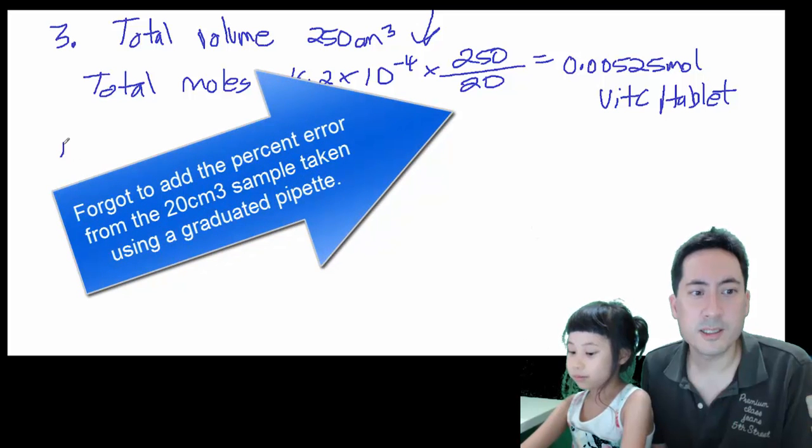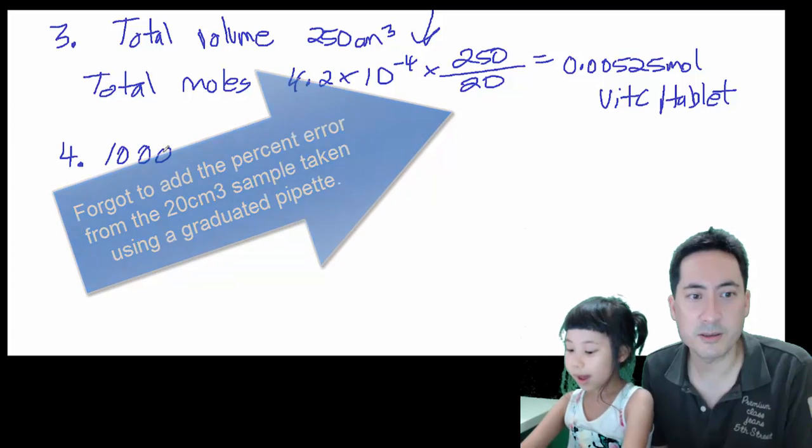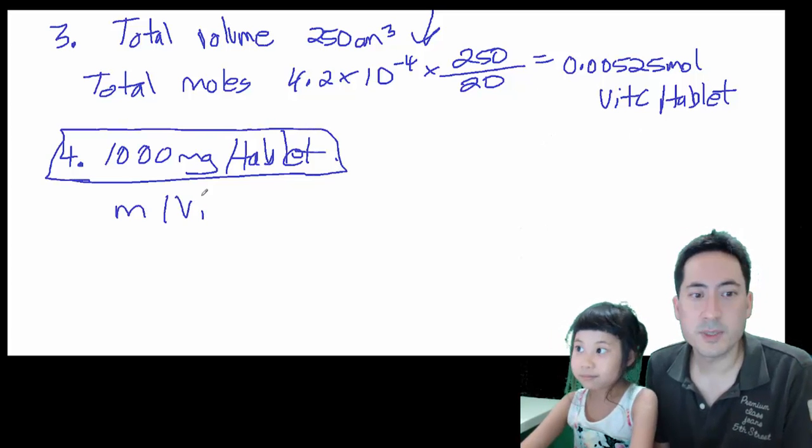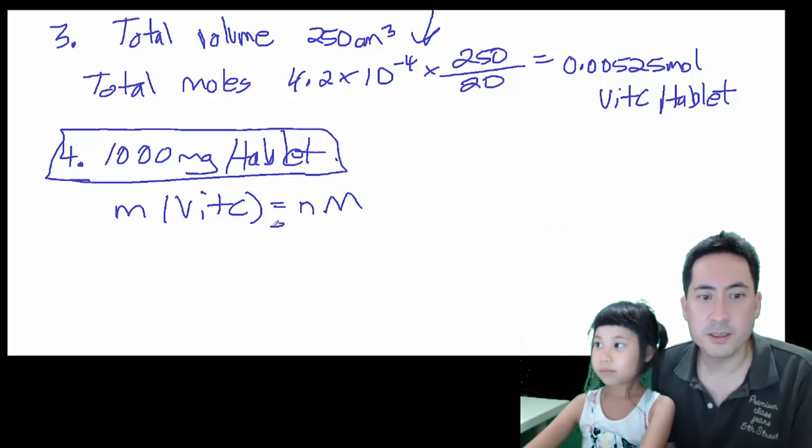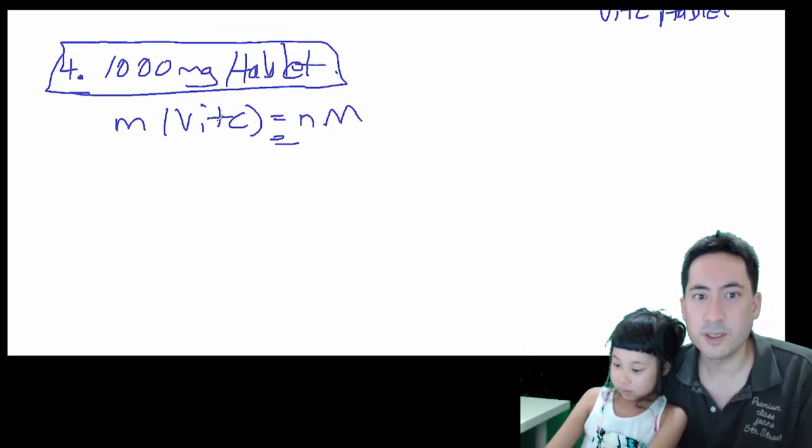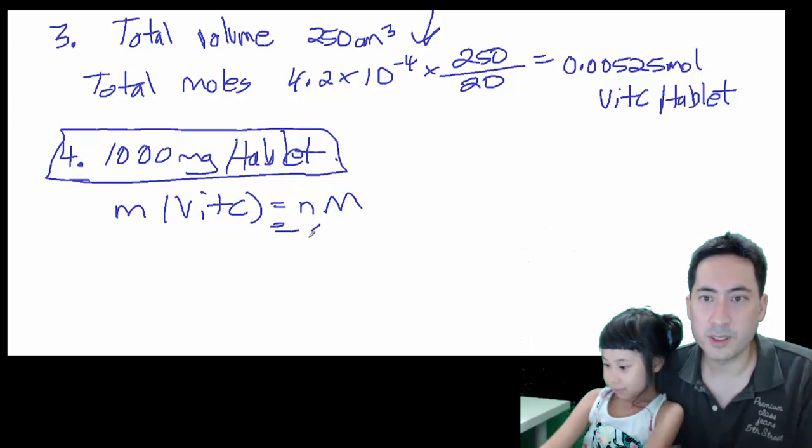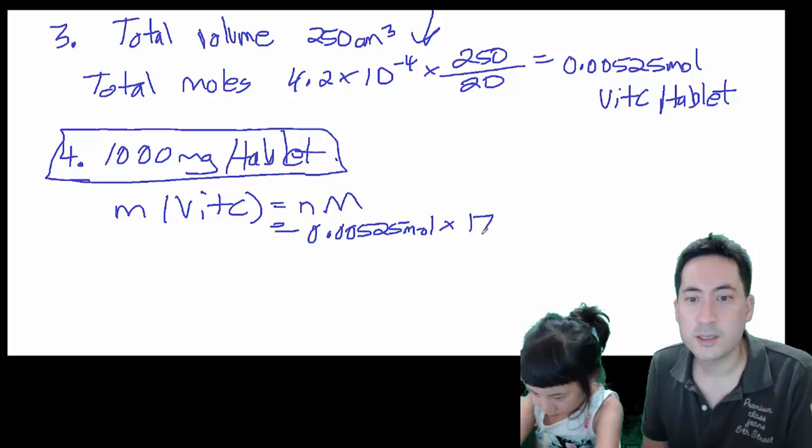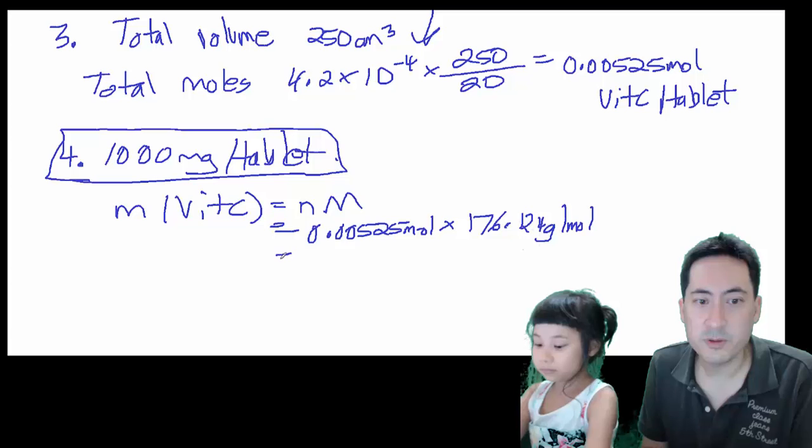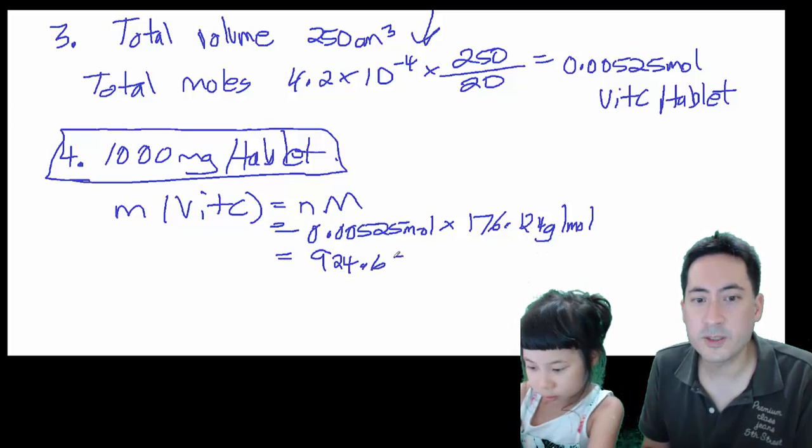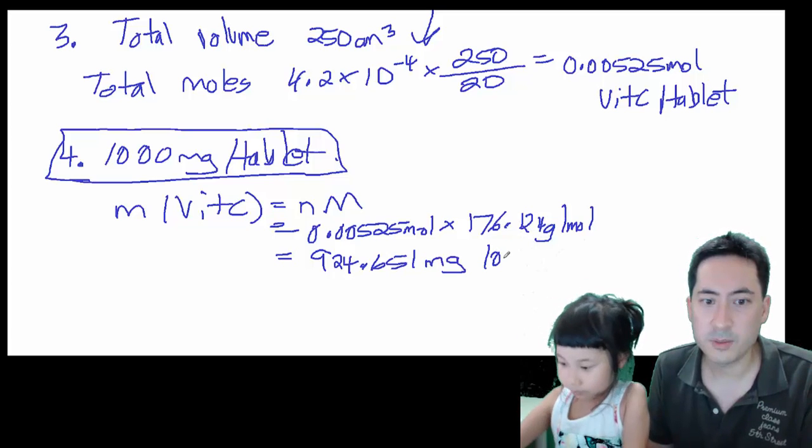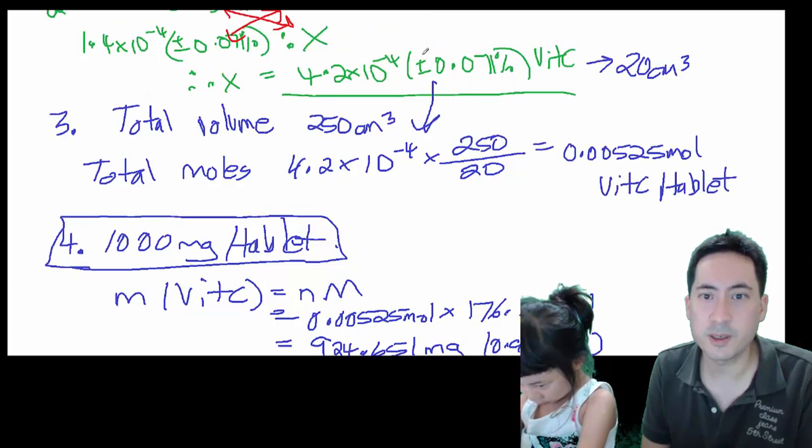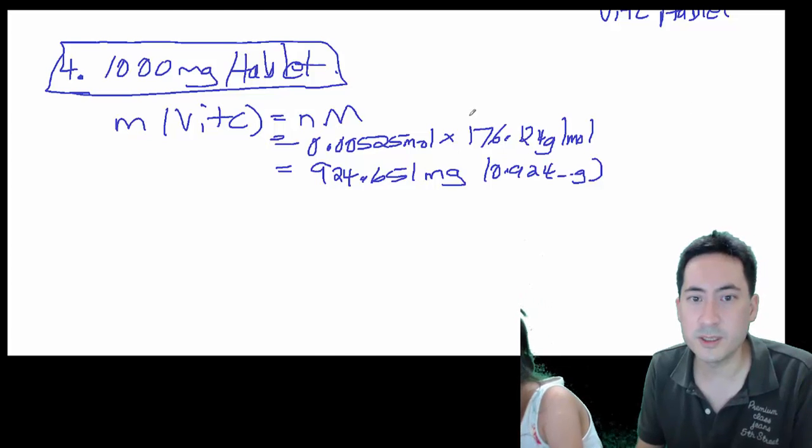Okay, so lastly we're going to compare this to the published value. So the actual per tablet, they said it was a thousand milligrams per tablet, and so we need to get to that value, and so we need to convert to mass. So the mass of the vitamin C tablet is number of moles times molar mass. Now I'm going to leave it to you to work out what the molar mass of the vitamin C tablet is, but I've got it here. So I'm just going to put these values in, so it's 0.00525 moles times 176.124 grams per mole. So if you do that on the calculator, you should get 924.651 milligrams.